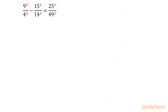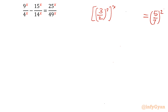If you observe, 9 over 4 is the square of 3 over 2. On the right-hand side, 25 over 49 is 5 over 7 whole squared, raised to the power x by exponent properties. For 15, we can write it as 3^x times 5^x by exponent property. Factors of 15 are 3 and 5; factors of 14 are 2 and 7, so we split that.